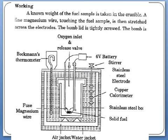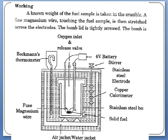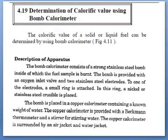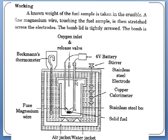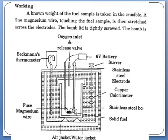The bomb calorimeter consists of a strong stainless steel bomb inside which the fuel sample is burnt. The bomb is provided with an oxygen inlet valve and two stainless steel electrodes. Current is passed through these electrodes, and the magnesium wire in contact with the fuel causes ignition. To one of the electrodes, a small ring is attached, and a nickel or stainless steel crucible is placed on this attachment.